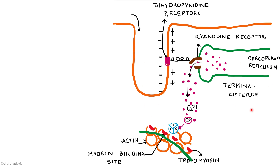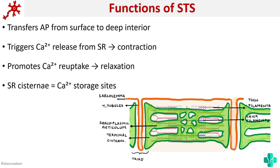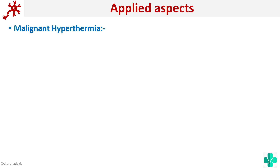That is the role of the sarco tubular system — to ensure that depolarization reaches the whole muscle fiber and for release of calcium so contraction can take place. The functions of the sarco tubular system are: it transfers the action potential from the surface to the deep interior, triggers the release of calcium from the sarcoplasmic reticulum during contraction, promotes calcium reuptake during relaxation, and the cisternae act as a calcium storage site.